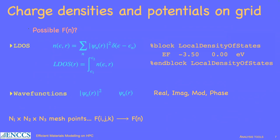You can also plot the local density of states, which is an energy decomposition of the density: within a certain energy range, what is the amount of charge you have? By defining the energy range, you can plot the contribution of all electronic states to the electronic density. This requires a block where you define the energy range for integration. Additionally, you can plot the wave function — either the norm or just the real part of the complex quantity, including real and imaginary components.